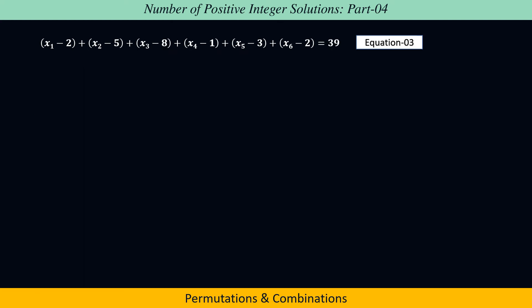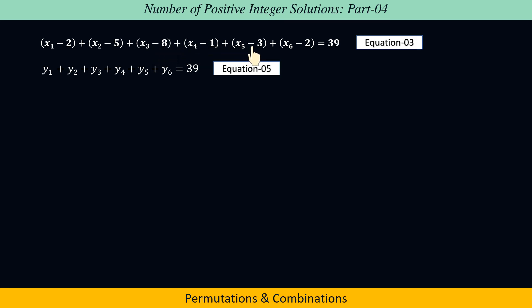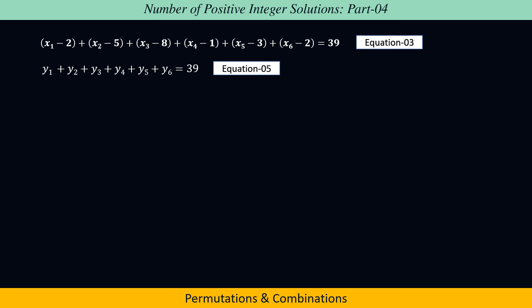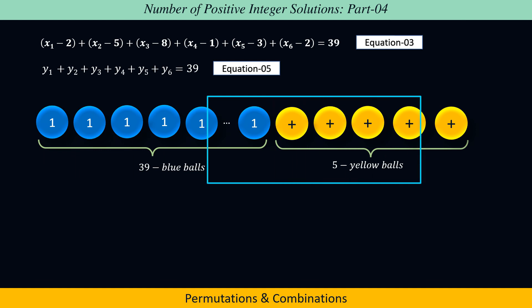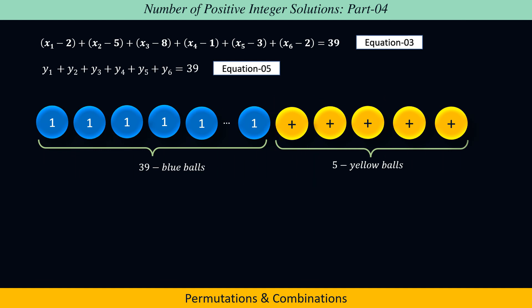To solve equation 3, let us assume y1 = x1 − 2, y2 = x2 − 5, y3 = x3 − 8, y4 = x4 − 1, y5 = x5 − 3, and y6 = x6 − 2, in order to find non-negative integer solutions of equation 5. The number of non-negative integer solutions of equation 3 equals that of equation 5. This is equivalent to arranging 39 blue colored balls and 5 yellow colored balls, so the total number of ways is 44! / (39! × 5!), which comes out to be 10,86,008.